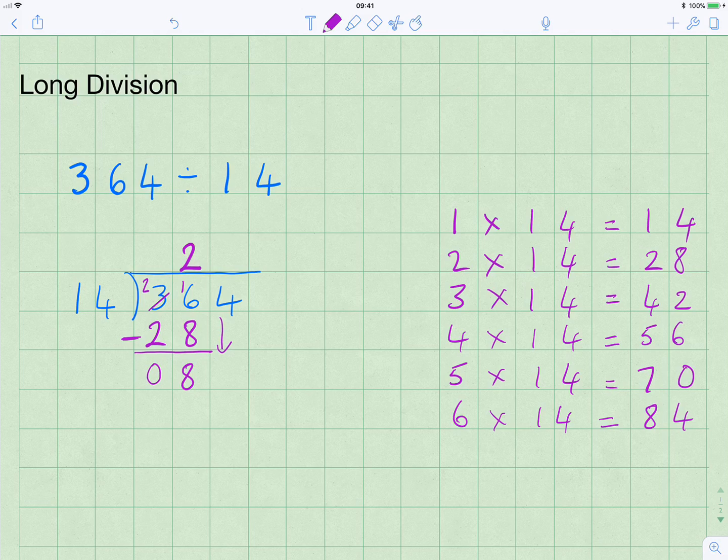And then we bring down the next number 4 and ask ourselves how many times does 14 go into 84? Well, if we look down here, we worked out 6 times 14 equals 84. So we can say 14 into 84 goes 6 times exactly. But just to remind us of the way of doing this and just to double check, we write the 84 down there and check that 4 from 4 is 0, 8 from 8 is 0.